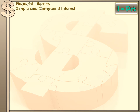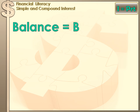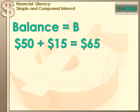There's one last term to introduce: balance, which we'll call B. Balance is the amount of money in the account, or the amount you're owed, at any particular time in the future. If you invested $50 in a savings account, you'd have more than $50 after a year because you'd have earned some interest — that total would be your balance after one year. In the last problem, we borrowed $50 and paid it back plus $15 interest, so our balance before we paid it back, after two years, was $65 — that was the amount we had to pay back when we closed the account.